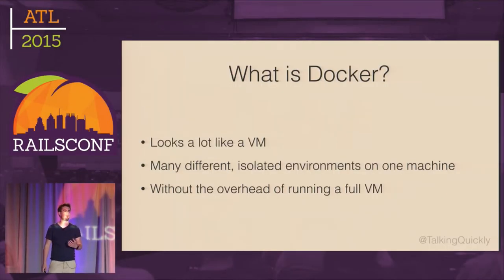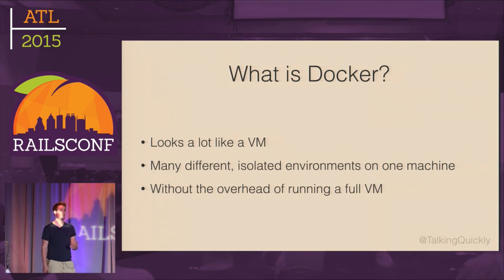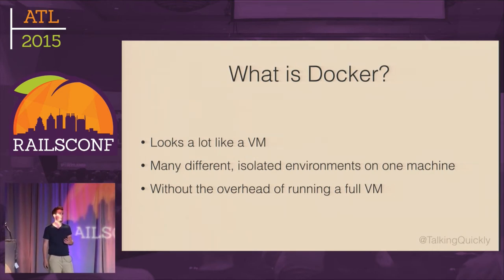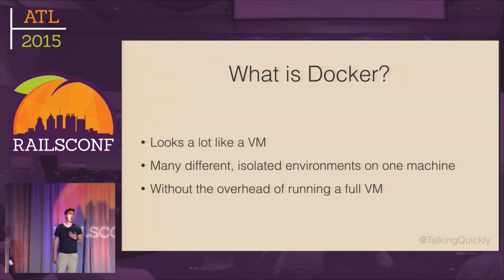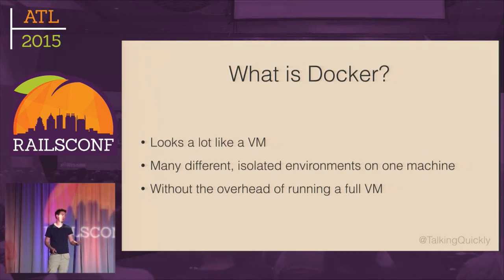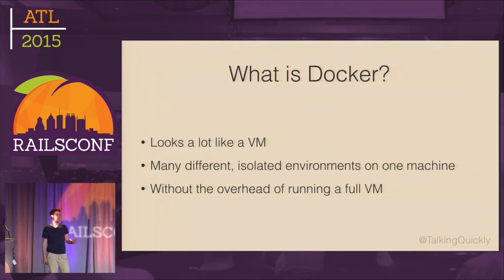From the outside, in terms of how it's used, Docker looks quite a lot like a normal virtual machine. A virtual machine allows us to take one host and partition it into multiple smaller hosts. Each of those virtual machines can run a different OS, have different packages and dependencies. We can run processes in each of those VMs, and those processes don't know they're running in a VM or anything about processes running on other VMs or on the host itself.